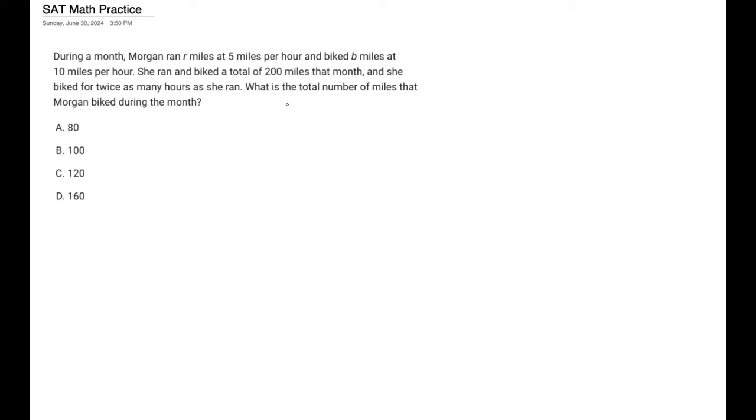So there's a couple ways you can approach this. I think the simplest way is honestly just through ratios and systems of equations. First off we have 200 miles that she runs in total. We can set this equal to R plus B because that's the total mileage that she ran, the number of miles she runs and the number of miles that she bikes.